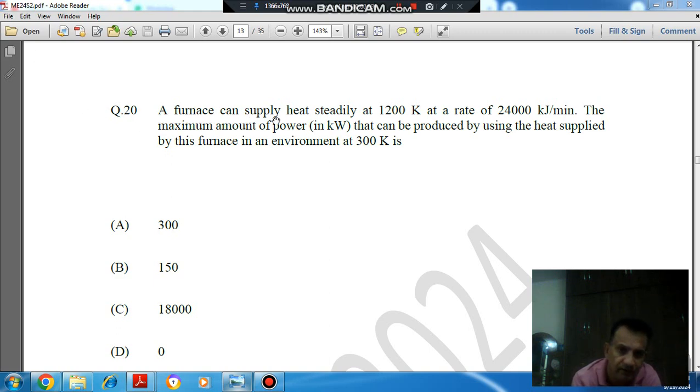A furnace can supply heat steadily at 1200 Kelvin at the rate of 24,000 kW per minute. The maximum amount of power in kW that can be produced by using the heat supplied by this furnace in an environment at 300 K.